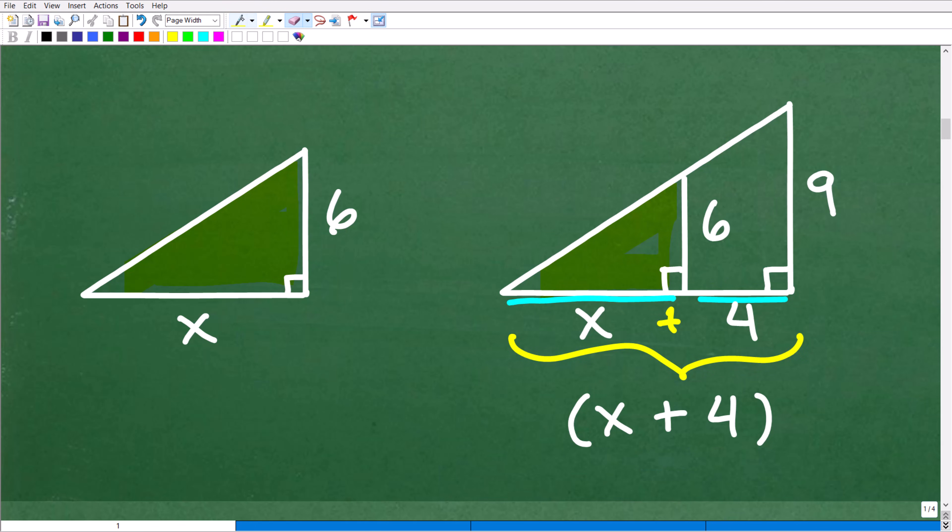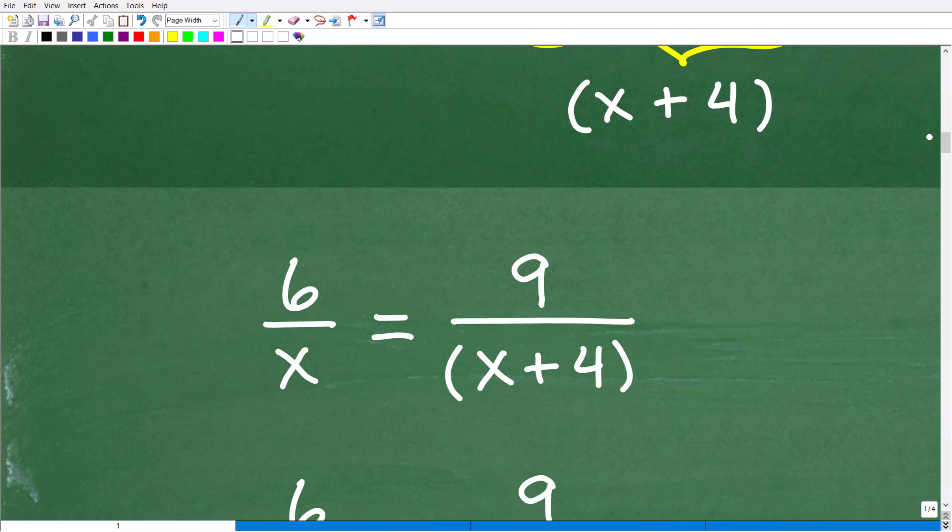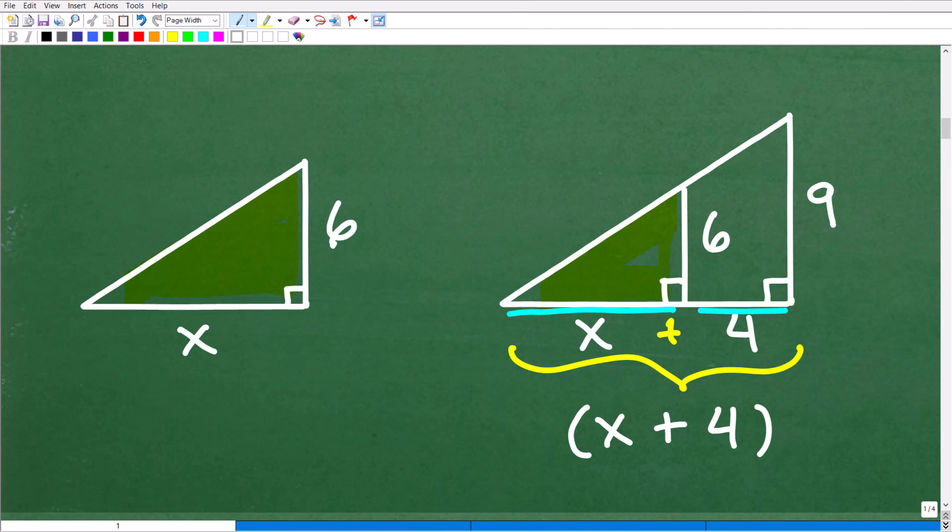Here is the proportion I set up: 6 over x equals 9 over x plus 4. What did I do? I'm comparing the height to the base - this would be 6 over x. This is a ratio, and that's going to be the same as this height to the base - 9 to the base which is x plus 4.